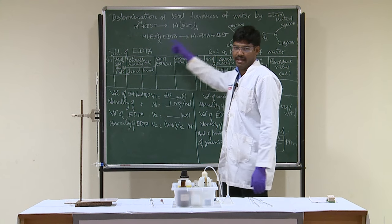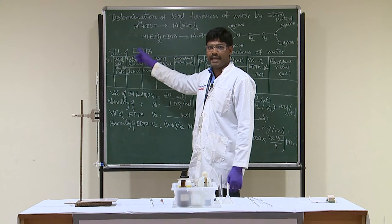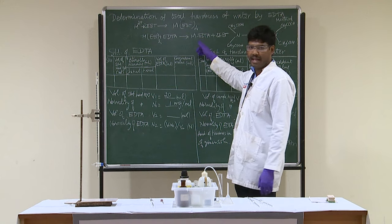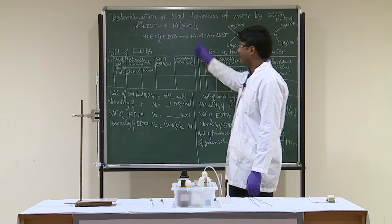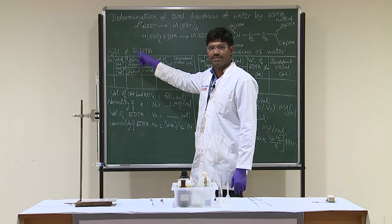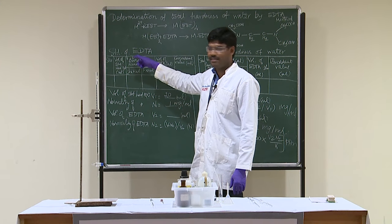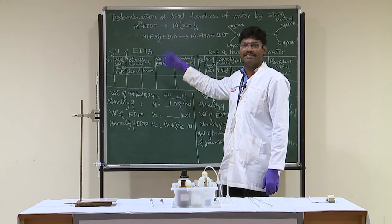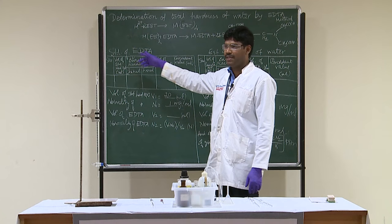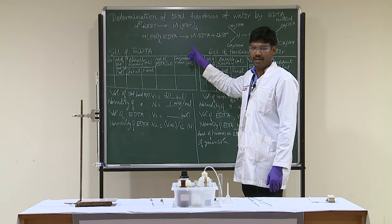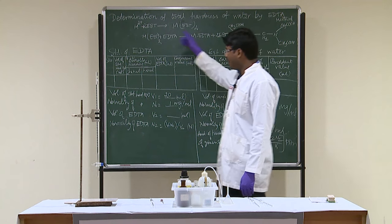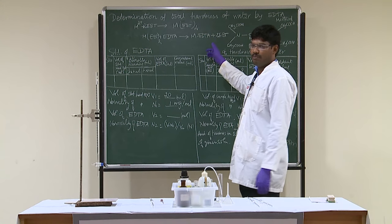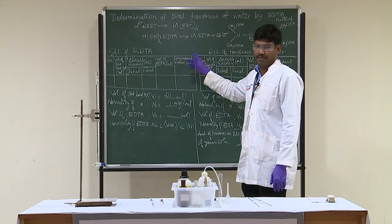When we introduce the EDTA, the free cations present in the water will complex with the EDTA, forming M-EDTA. After all the free metal cations are utilized, the metals bound with EBT will be taken by the EDTA — as it is stronger than M-EBT — forming the M-EDTA complex. Once all the metals bound with EBT are utilized, free EBT will be formed, and that will be the end point.